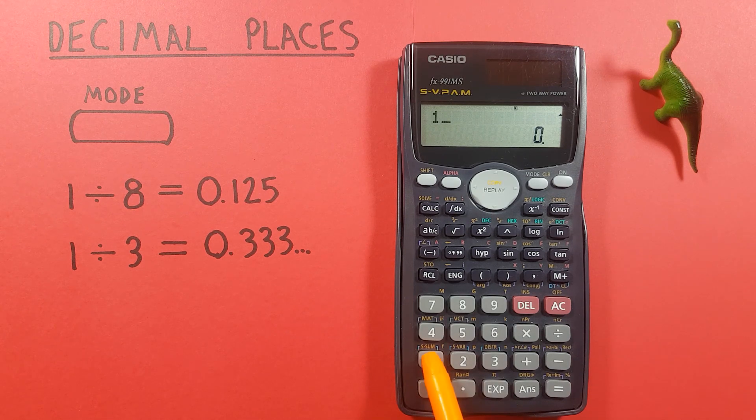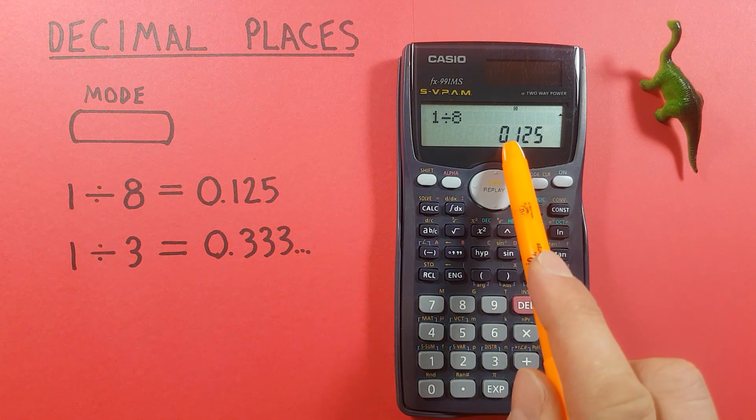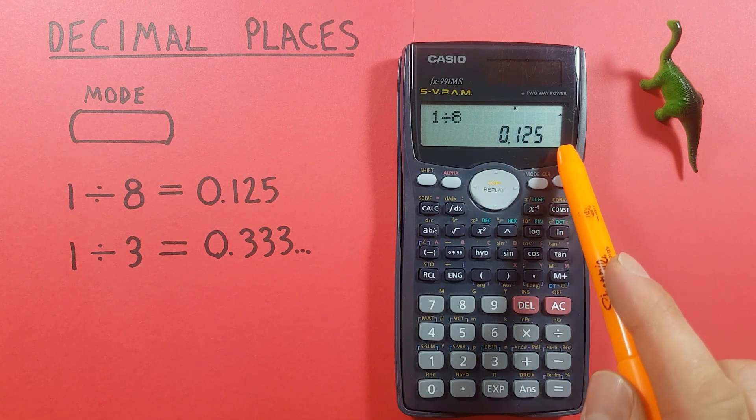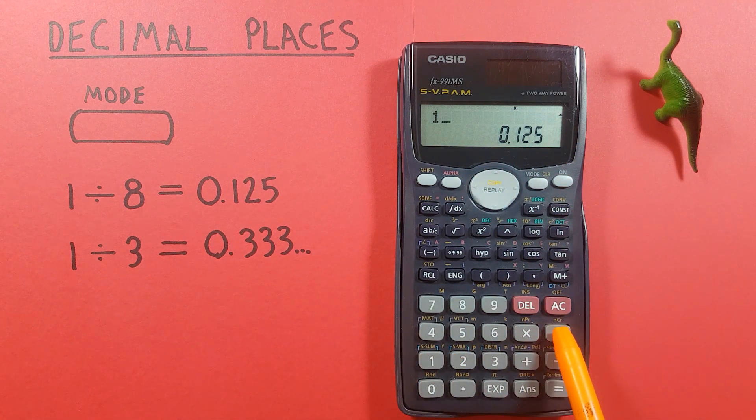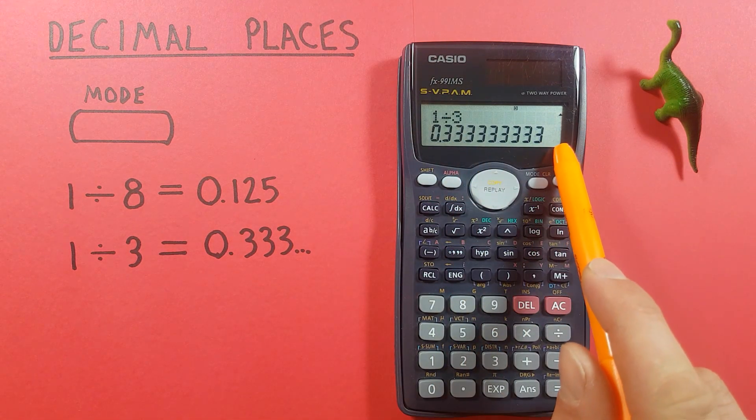So if we do 1 divided by 8 we see we get three decimal places after the zero because the answer is 0.125 while we do 1 divided by 3 we see we use all our decimal places to display the answer.